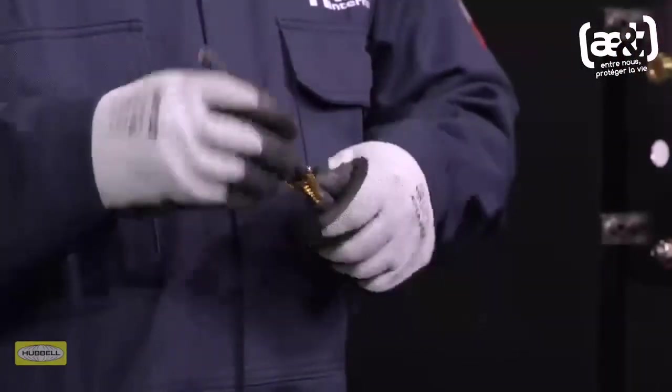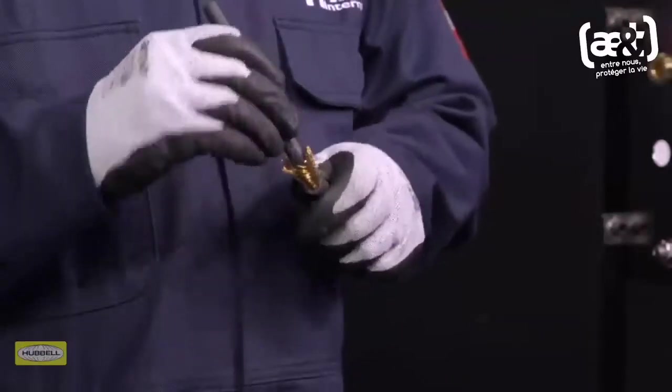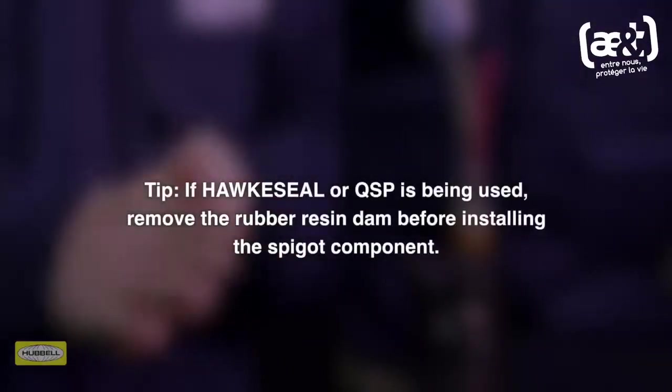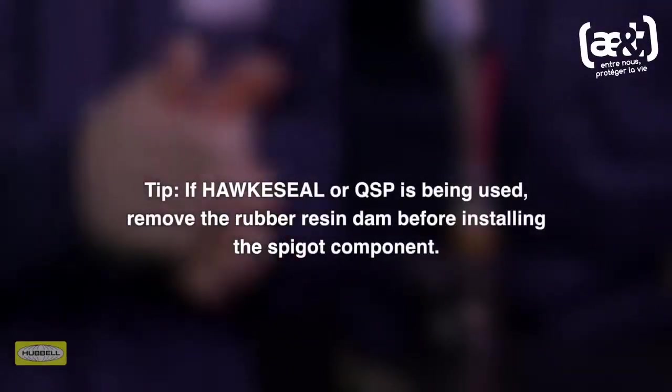Spread the armor or braid by gently pulling it away from the inner sheath of the cable. A screwdriver may be required for larger types of cables. Tip: If Hawke Seal or QSP is being used, remove the rubber resin dam before installing the spigot component.